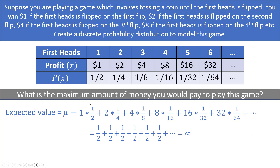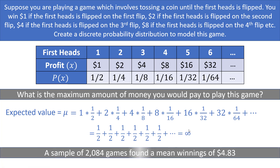Expected value kind of assumes you've run the simulation an infinite number of times. Theoretically you could win an astronomically large amount by flipping tails a million times and then heads — but the probability is so small it's essentially never going to happen. From a sample of 2,084 games, the mean winnings was about $4.83, which is a more realistic figure. That finishes the examples on discrete distributions — hopefully you found it helpful!